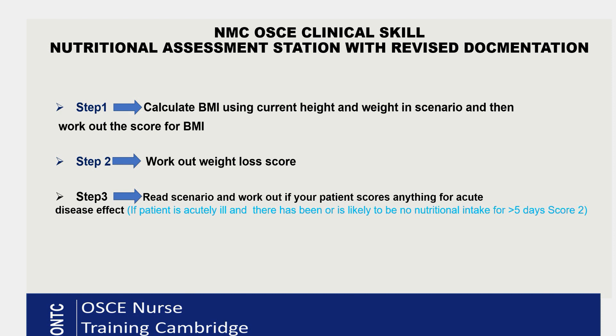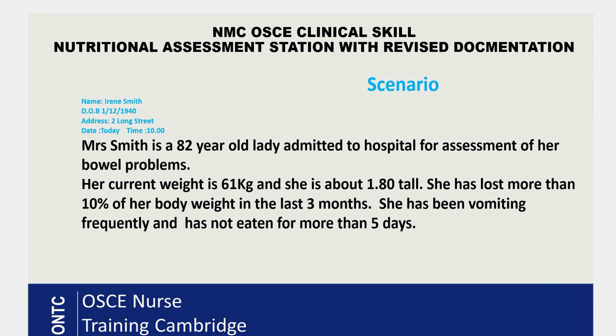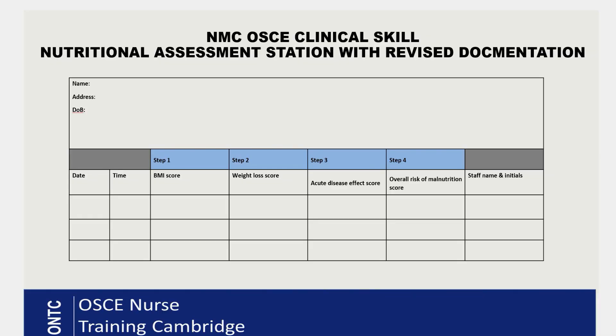That's what the acute disease effect is — a brief recap of how the Malnutrition Universal Screening Tool works. There are three steps and you need to work all three out correctly from your scenario. In your exam you'll be given a scenario, and then the new document I mentioned. It asks for patient name, address, date of birth, date, time, the score for Step 1, Step 2, Step 3, overall score, and then your signature and initials.